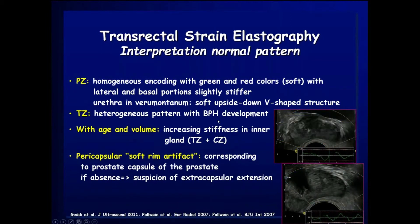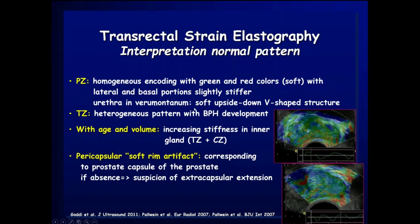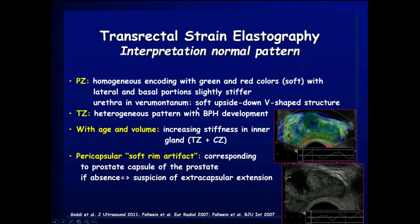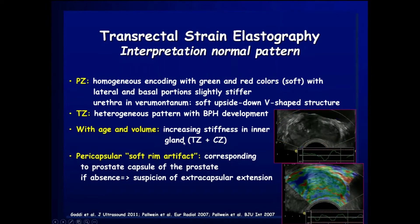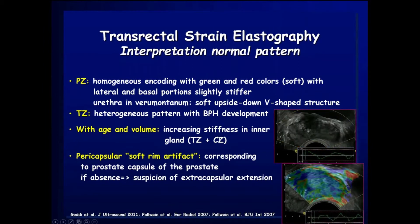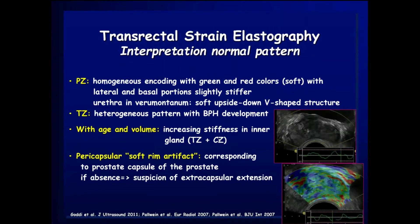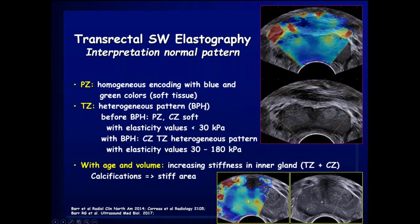With strain elastography, the normal pattern of the peripheral zone is homogeneous, encoded in green and red colors, while the transition zone appears more heterogeneous due to BPH development. In some cases you can observe a soft rim artifact corresponding to the prostate capsule.